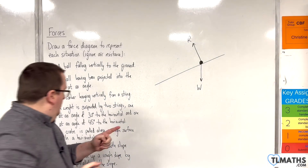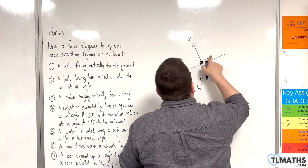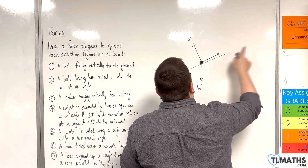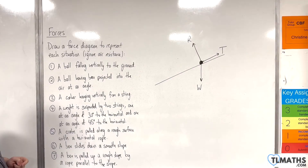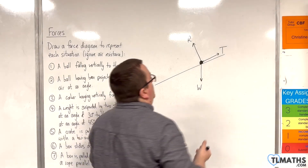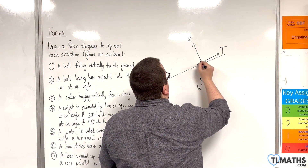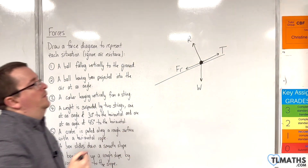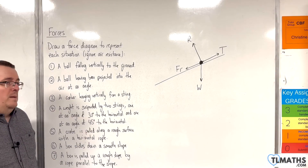It's being pulled up a rough slope, so there will be a rope pulling it up the slope — there will be tension in that rope. And because it's a rough slope, friction will be acting in the direction opposite to the direction of motion, so there will be friction acting down the slope. That is the force diagram for number seven.